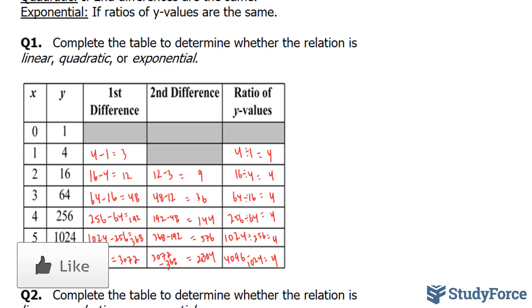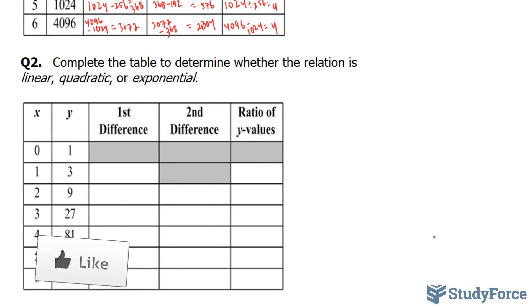Let's try question 2. And instead of going through all of these columns, I'm going to try the ratios of y values. And if it's consistent, then we don't need to find the first and second differences.